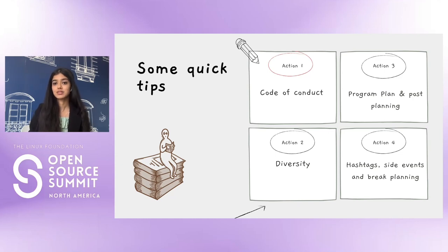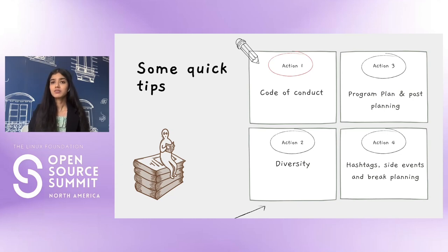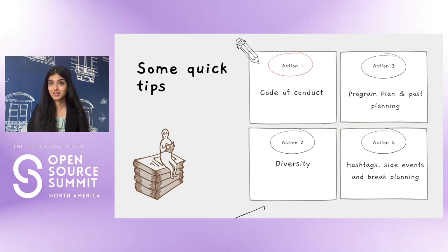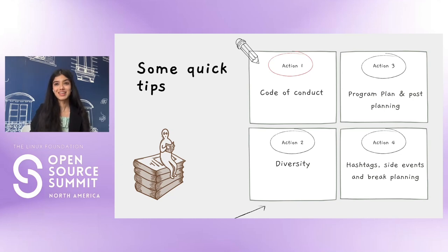Second quick tip is diversity. We have to do a lot of this intentionally to overcome bias. For example, proactively look for a speaker with name recognition, but also if the speaker can be a woman, that is great. If they can be a person of color, that will be better. If they can be from a gender minority, fantastic.